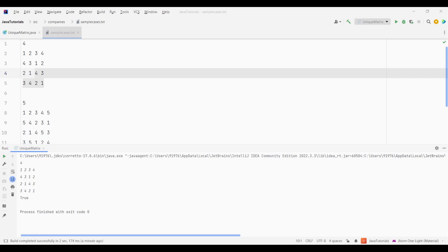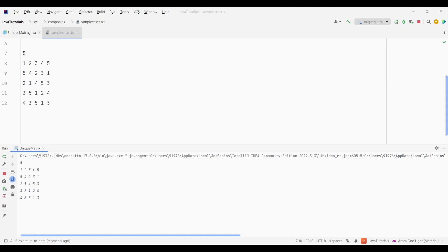Now let's execute using the second test case. Here the output is false which is correct since our matrix has a missing value, so it means that it is not a unique matrix.